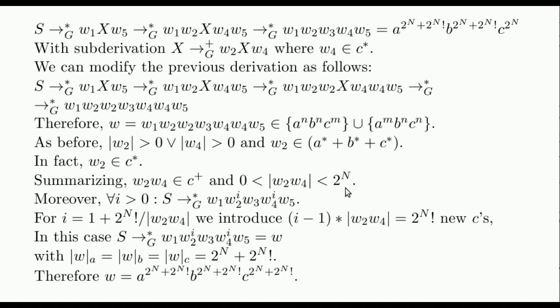Moreover, it is smaller than 2^N, since this is the amount of c's occurring in the original word. By iterating the subderivation from X, we can generate all the words of this kind.